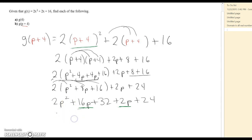Sorry, that's not very clear. 2P squared. So that one came down. 16P plus 2P is going to be 18P. And then we have 32 plus 24 gives us a positive 56.